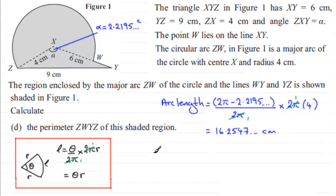So therefore when it comes to working out the perimeter of the shape, what we have is that it equals the arc length 16.2547 and so on plus the distance Z to Y which is 9 plus the distance WY which is going to be just 2 centimetres.